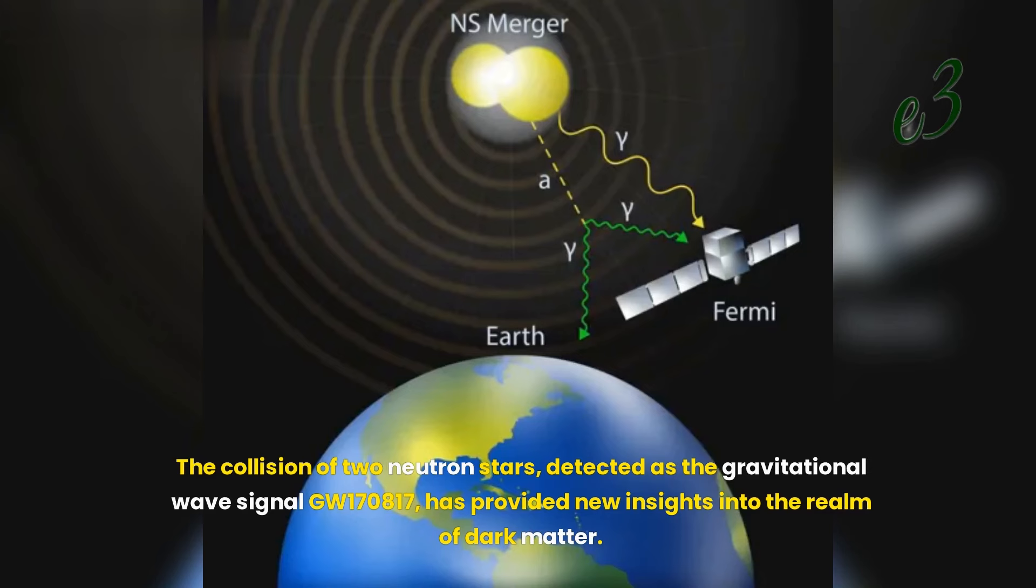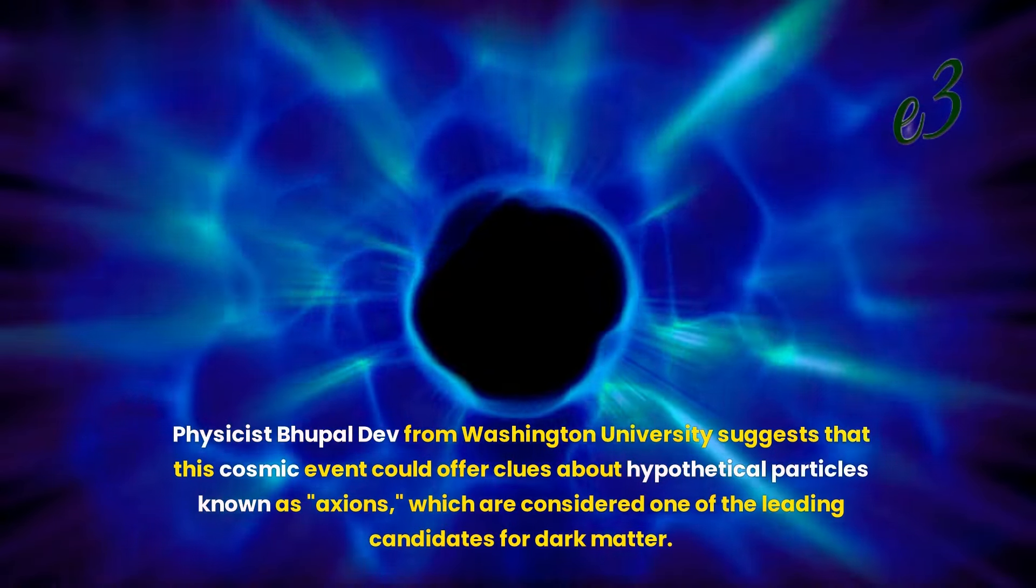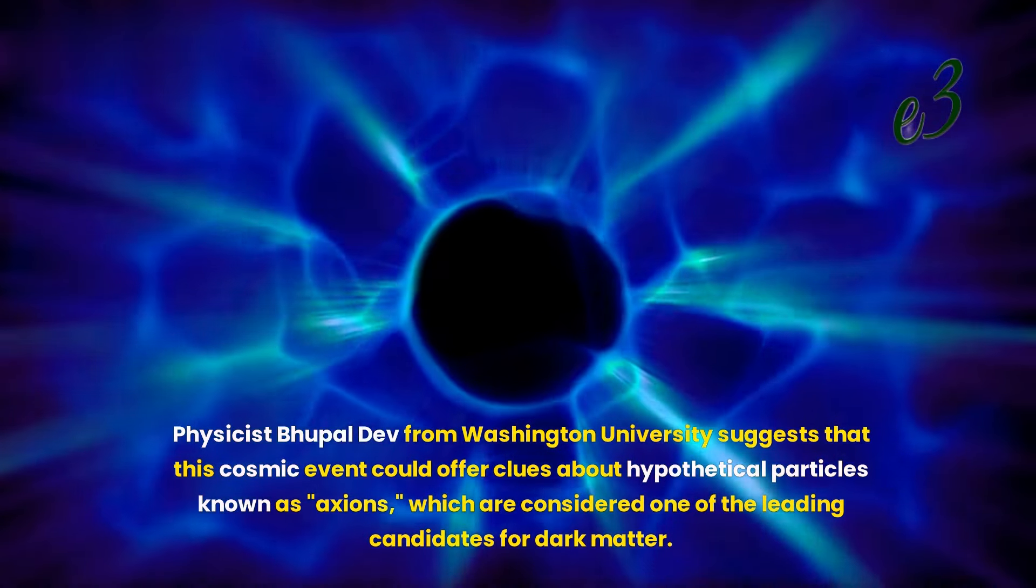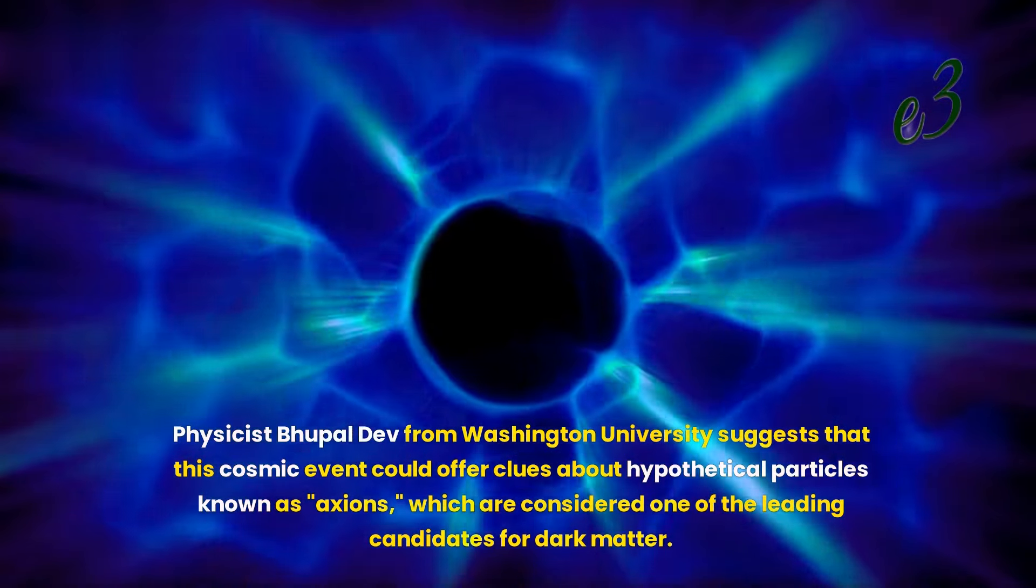The collision of two neutron stars, detected as the gravitational wave signal GW170817, has provided new insights into the realm of dark matter. Physicist Vupal Dev from Washington University suggests that this cosmic event could offer clues about hypothetical particles known as axions, which are considered one of the leading candidates for dark matter.